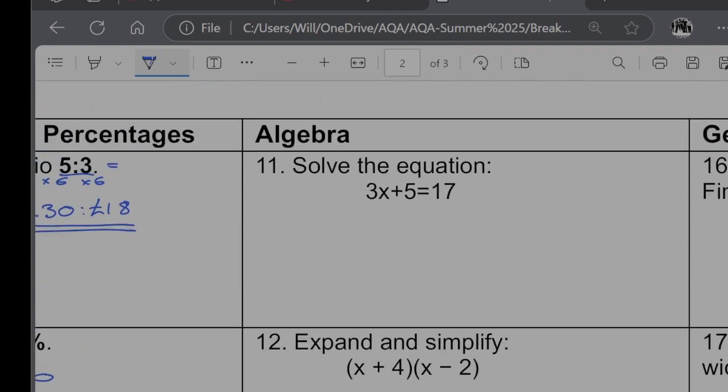Question 11. Solve 3x plus 5 is equal to 17. So I'm going to start by minusing 5 from both sides. That would give me 3x has to be equal to 12. I'm then going to divide both sides by 3. And that would give me x is equal to 4.